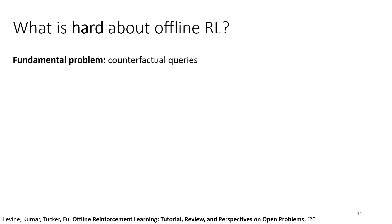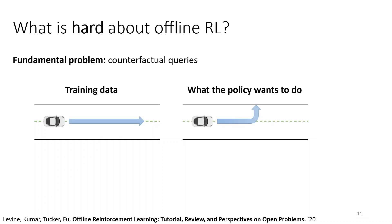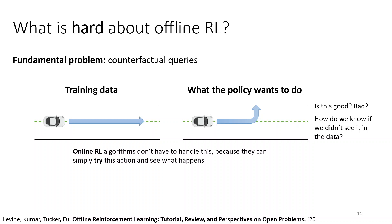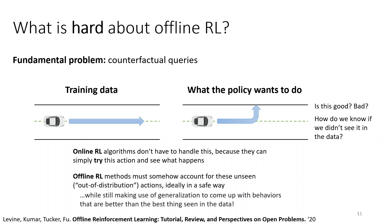What's hard about offline RL? The fundamental problem is counterfactual queries. If you've only ever seen data of cars driving on roads, the RL algorithm needs to decide if swerving left to go off the road is a good idea or a bad idea — and how do you know if you didn't see it in the data? Online RL algorithms can simply try the action and see what happens. But offline RL has to account for unseen out-of-distribution actions in a safe way, while still using generalization to come up with behaviors better than the best thing seen in the data. Take the action if you can generalize to it, but avoid it if you can't.